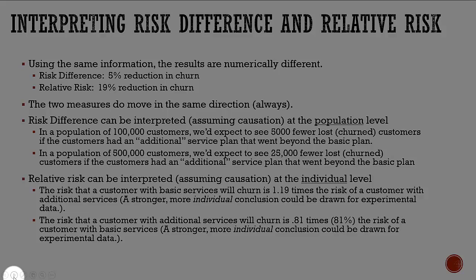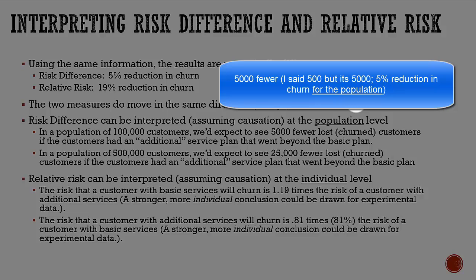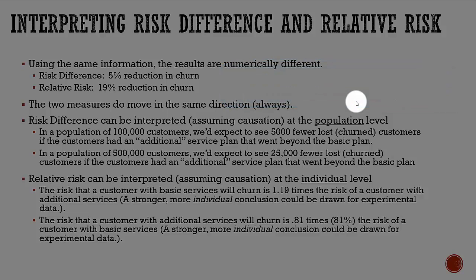We can look at risk difference — the difference between the two proportions — and relative risk, which is one divided by the other. They always move in the same direction. The risk difference operates at the whole population level: if we had 100,000 customers and there's a difference of 5%, we'd expect 5,000 fewer lost with the additional service plan. Whereas relative risk is on the individual level — the risk that a customer with basic services will churn is 1.19 times the risk of a customer with additional services, or equivalently, 0.81 times the risk of someone with basic services if they have additional services.